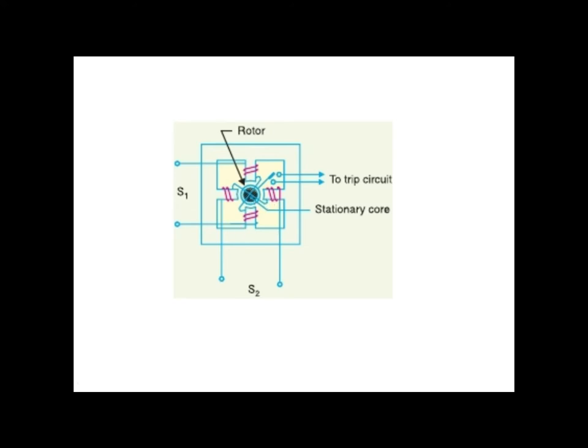The rotor is a hollow cylindrical cup type in structure. Compared to the induction motor, the difference is that in this relay, the rotor core is stationary and only the rotor conductor portion is free to rotate about its axis.